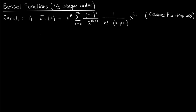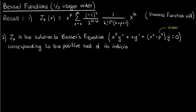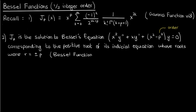The second result I want to review is from my Bessel function and Frobenius method video, where I show that J sub p is the solution to Bessel's equation corresponding to the positive root of its indicial equation, whose roots were r equals plus or minus p. So in this case the positive root would be plus p.